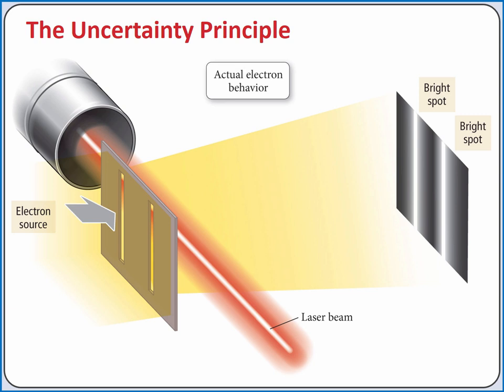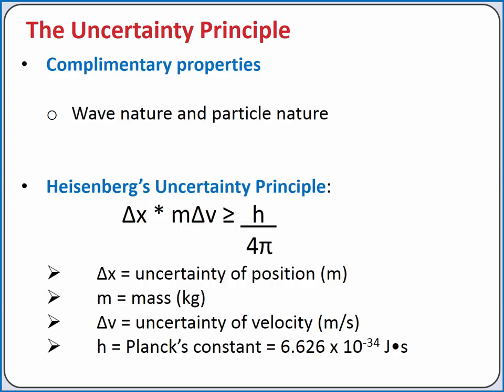Instead, the typical pattern for a particle forms on our film. We cannot observe the electron simultaneously acting as both a wave and a particle. The wave nature and particle nature of an electron are complementary properties. We cannot observe both at once.